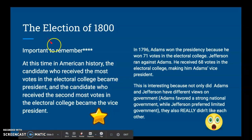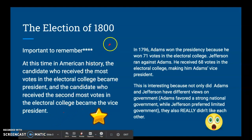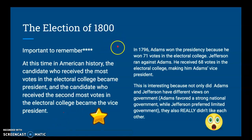Here's something important to remember. At this time in American history, the candidate who received the most votes in the Electoral College became the president, and the candidate who received the second most votes in the Electoral College became the vice president. This is very different from what we see today, where a president has a running mate who will be the vice president, and whichever ticket — the president and vice president — gets the most electoral votes, they are the victors.